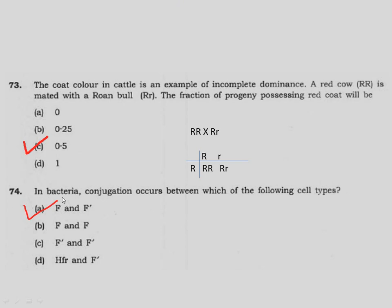Question 74: In bacteria, conjugation occurs between which one of the following cell types? In bacteria, conjugation is between male and female, where the male has the F plasmid and the female does not. The male is denoted as F prime and the female as F. The correct answer is option A.